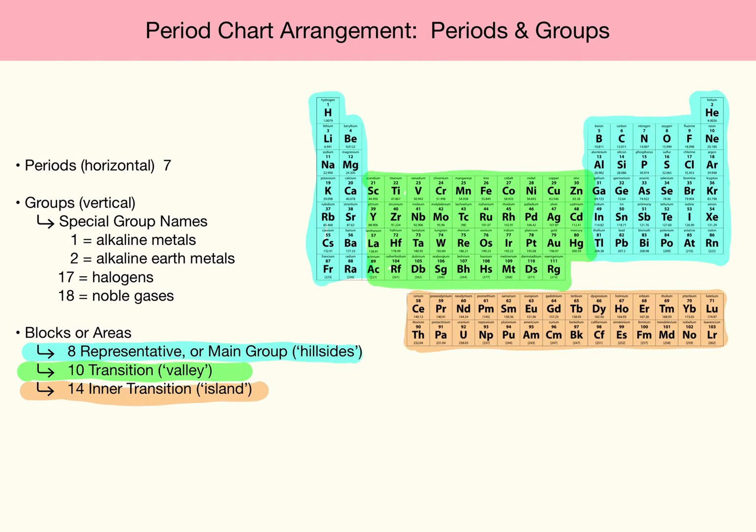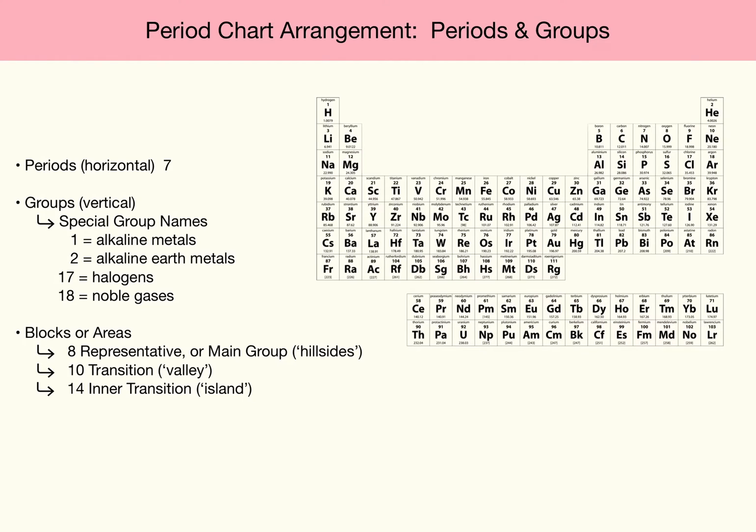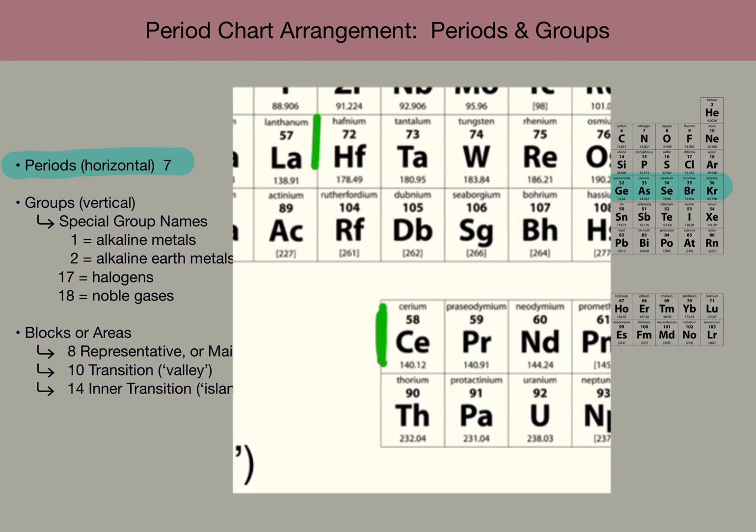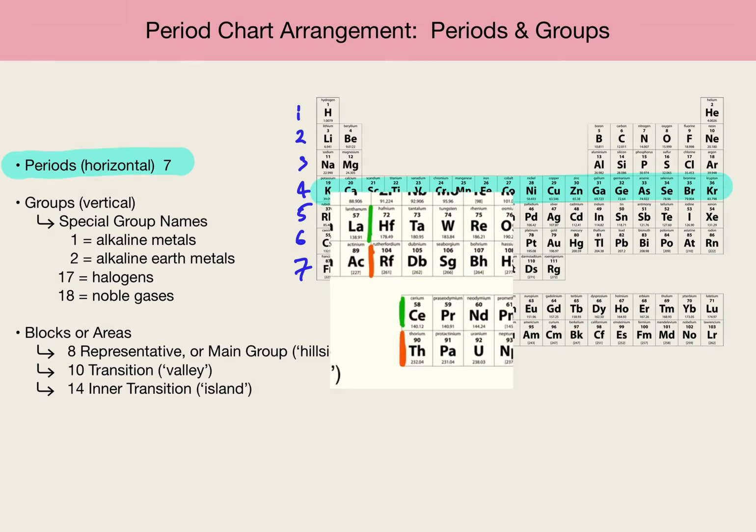So, those are the three main blocks. Next, let's have a look at the Periods and the Groups. Periods - they're the horizontal rows that go across the Periodic Table from left to right. There are seven rows on the Periodic Chart. Remembering that this top row of the Inner Transition Elements is spliced into Period 6, and the second row of Inner Transition is spliced into Row 7.